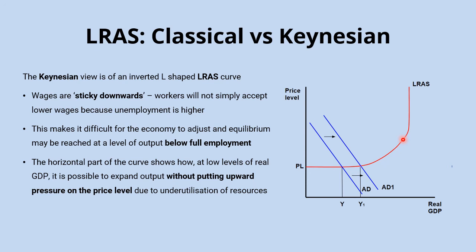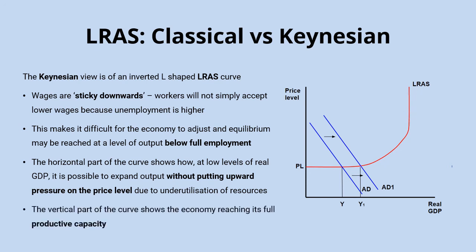Until a point where Keynes agreed that the long run aggregate supply curve does become vertical when the economy is operating at its full productive potential.